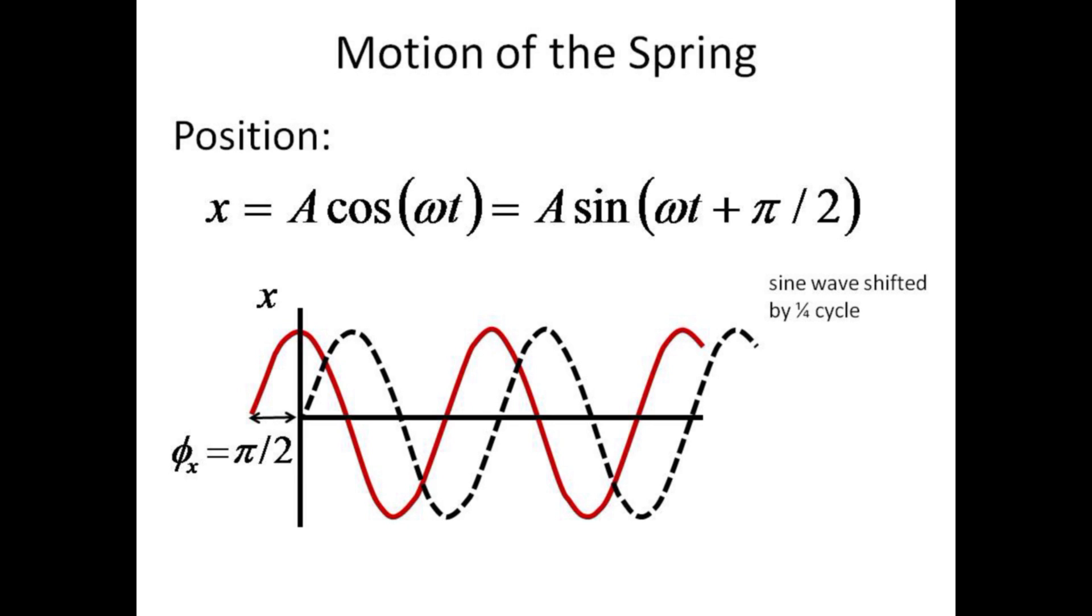So we could just as easily express the position as a sine omega t plus an initial phase angle of phi equals pi over two.